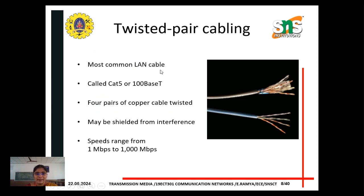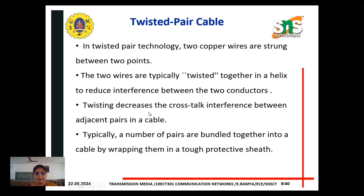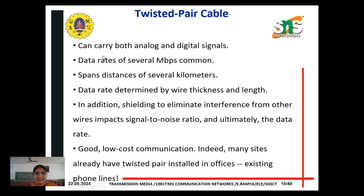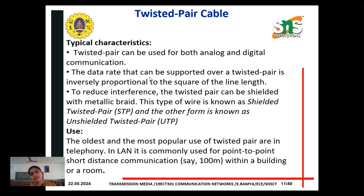Twisted pair cabling — the most common LAN cable is called CAT5 or 1000Base-T cable. It has four pairs of copper cable twisted, and may be shielded from interference. In twisted pair cable technology, two copper wires are strung between two points. Twisted pair cable can carry both analog and digital signals, with data rates of several megabits per second common. The data rate that can be supported over the twisted pair is inversely proportional to the square of the line length.